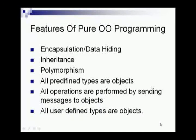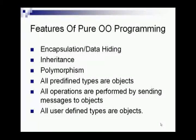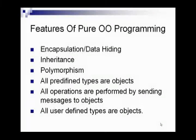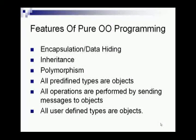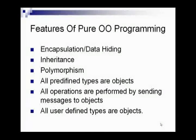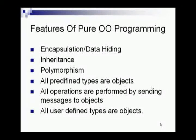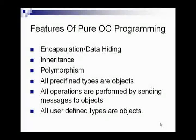There are six salient features of pure object oriented programming. Those are: encapsulation, inheritance, polymorphism, all predefined types are objects, all operations are performed by sending messages to objects, and all user-defined types are objects.